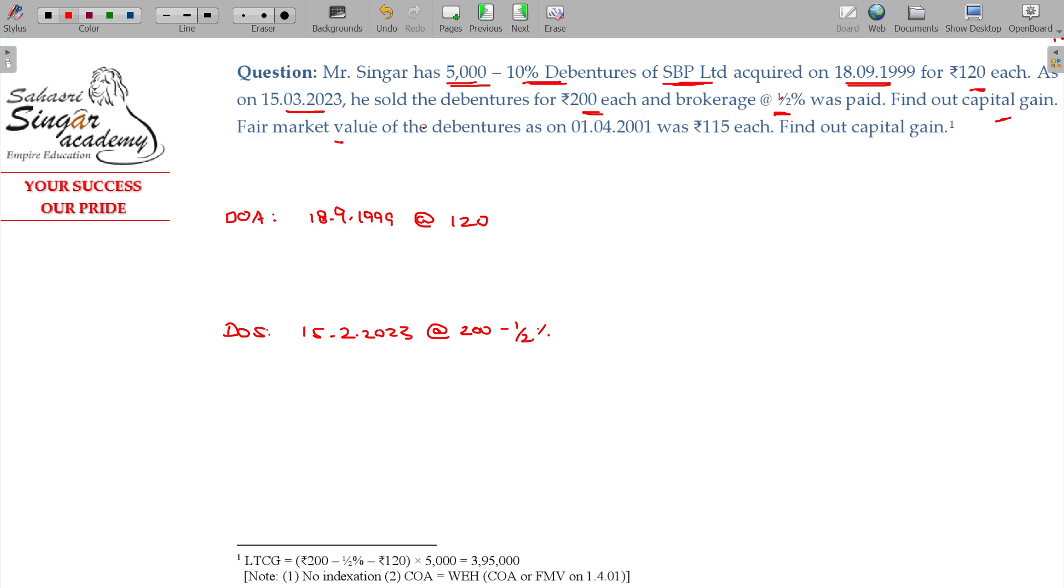So for the sale, you can compare with the fair market value. Fair market value as on 01-04-2001 is Rs. 115 for 5,000 bonds.